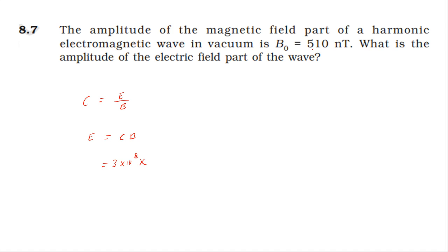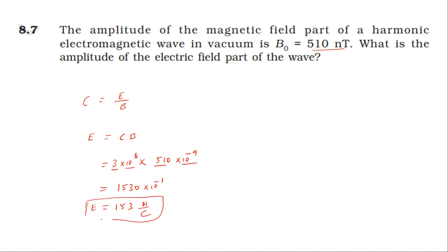Speed of light c = 3×10⁸ m/s, and B = 510 nanotesla = 510×10⁻⁹ tesla. Substituting: E = 3×10⁸ × 510×10⁻⁹. That gives 3 × 510 = 1530, and combining powers gives 10⁻¹. So E = 153 newton per coulomb, or 153 V/m. That is the amplitude of the electric field.